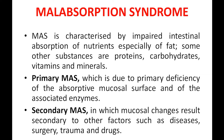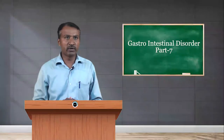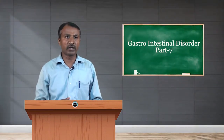There are two types of malabsorption syndrome: primary and secondary. Primary malabsorption syndrome is mainly due to primary deficiency of the absorptive mucosal surface and associated enzymes. In secondary malabsorption syndrome, mucosal changes result secondary to other factors such as diseases, infection, surgery to the intestine, trauma, or drugs — mainly antibiotics and some anti-psychotic drugs.